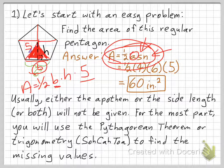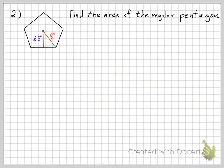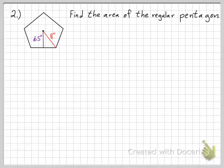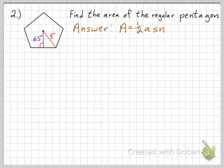Now we can move on to problem two. In this case, we're missing the side length — we don't know it. Find the area of this regular polygon. The formula is one-half ASN. The apothem is given as 6.5 inches, and it's a pentagon so N equals 5, but I don't know the side length — I'm missing it.